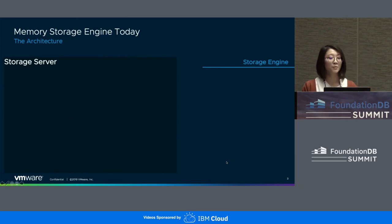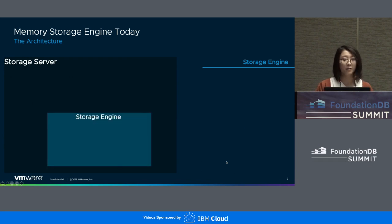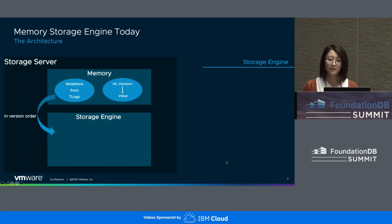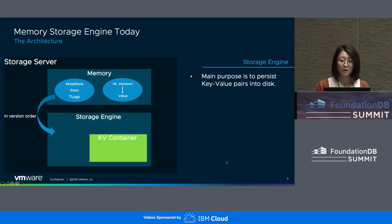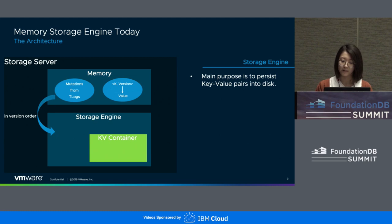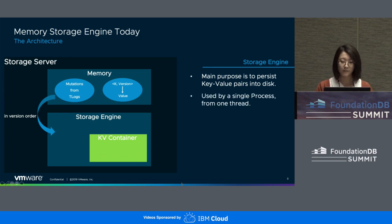Let's see how the storage engine fits into the big picture. In FoundationDB, we have a distributed log system and a storage server role. The storage engine lives inside the storage server, and each storage server contains exactly one instance of it. The storage server receives mutations in version order from the distributed log system and constantly applies them to the storage engine. The main purpose of the storage engine is to persist key-value pairs to disk. For the memory storage engine specifically, data is stored directly into the Kiwi container — the green box — in memory, but all operations are also written to disk. That's how durability is guaranteed. The Kiwi container is a component inside the memory storage engine that helps store and retrieve data. The storage engine is used by a single process from one thread, which makes development easier because we don't need to worry about concurrency issues.